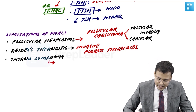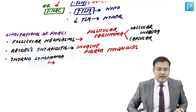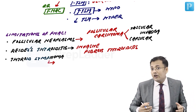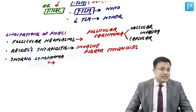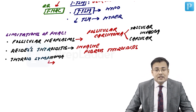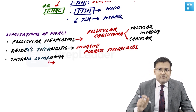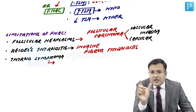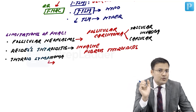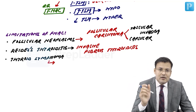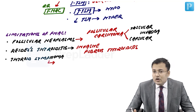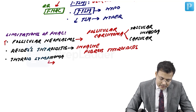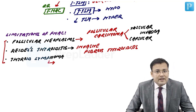The third limitation is thyroid lymphoma. Anywhere in the body, if lymphoma is suspected, the investigation of choice is biopsy, because adequate tissue is required to apply markers for diagnosis — which is not possible with FNAC.